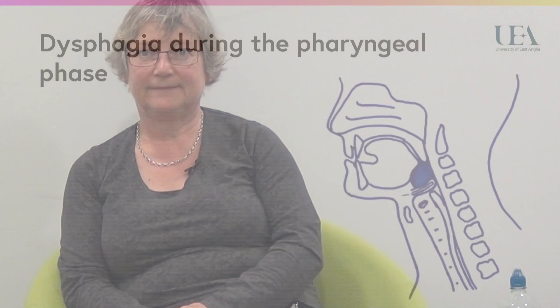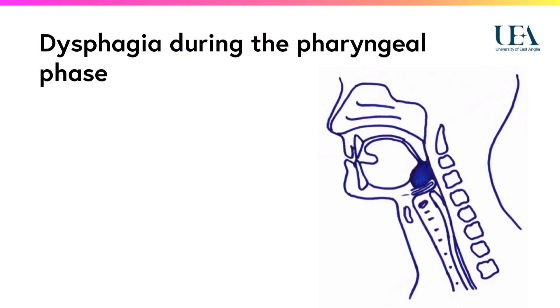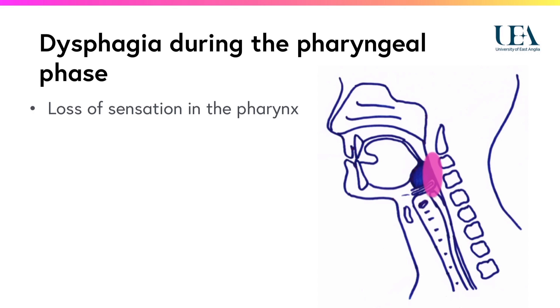Controlled transfer of the bolus is essential to triggering the pharyngeal phase. Even swallowing saliva is controlled, even though we are often not conscious that we are doing it. Loss of sensation or neurological failure to trigger this phase will result in absent or delayed initiation of the pharyngeal swallow. Material enters the airway, resulting in aspiration before the swallow.